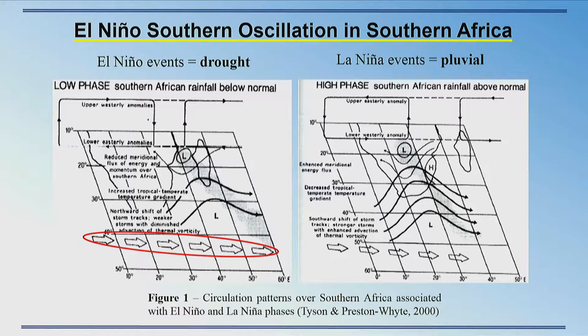On the other hand, La Niña results in wetter conditions. This is due to the shifting of the tropical temperate trough back over the continent, promoting convection in that region. The mid-latitude cyclone track shifts southward and the storms are stronger.